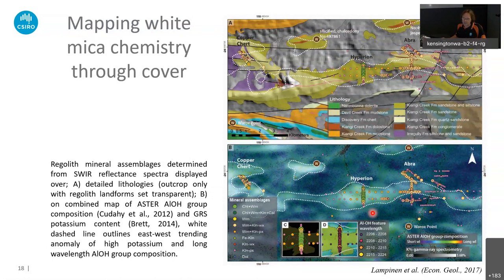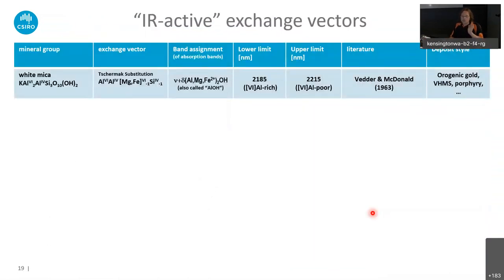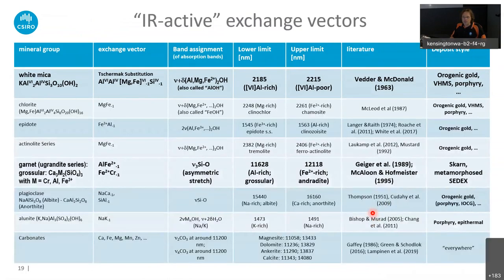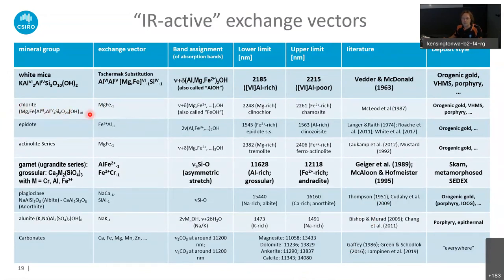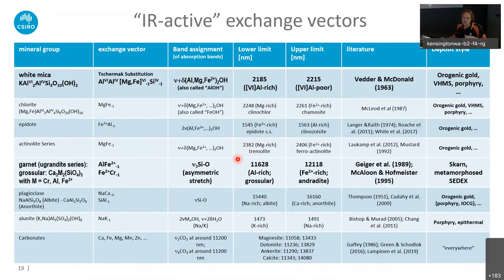So, lots of talk about white micas — but of course there are many other mineral exchange vectors we can map. This is just a few examples: you see similar exchange vectors and spectral signatures changing in the same principle as the Tschermak substitution in micas, in chlorites, epidotes, amphiboles, garnets, and feldspars, but also not only in silicates but in sulfates like alunite, carbonates, and so forth. You need to look at different parts of the reflection spectrum to map out these changes. I want to move on now to garnets.